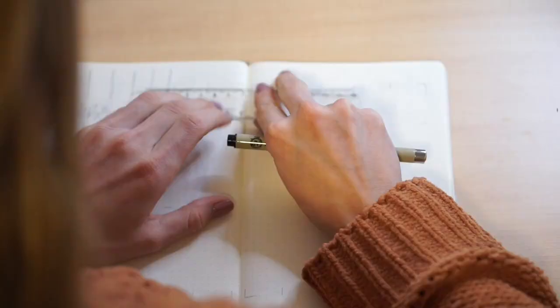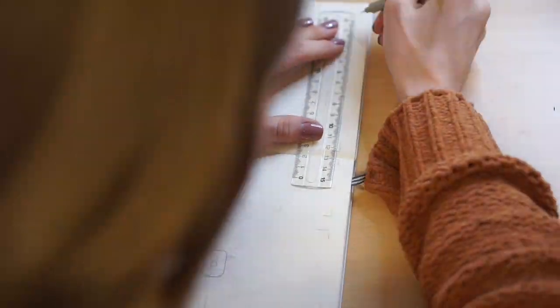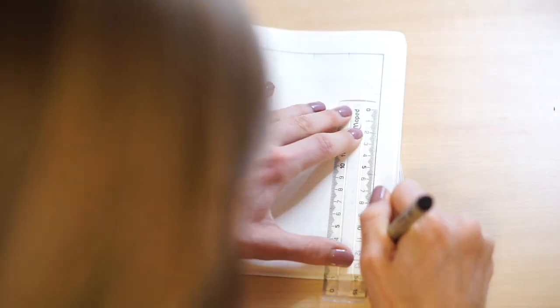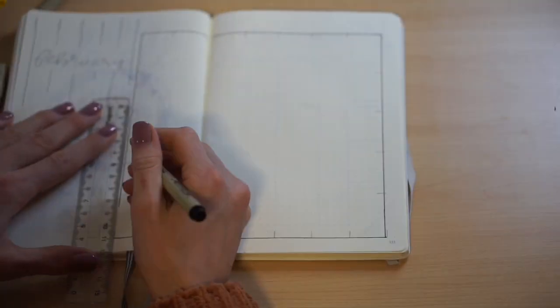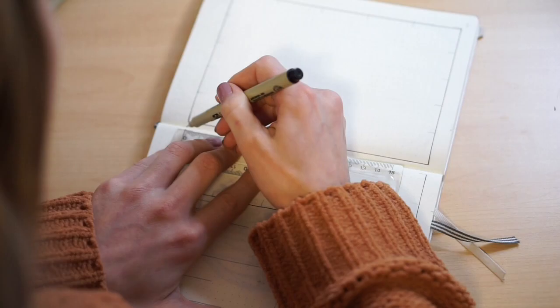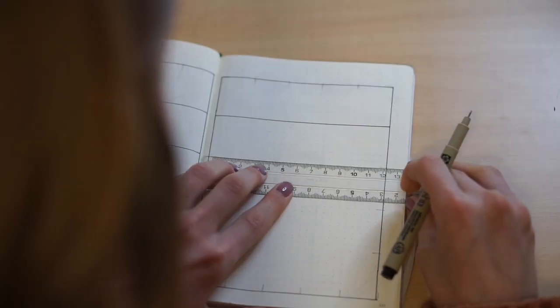Alright everyone, now I am moving on to my calendar spreads for the month of February. I decided to make my calendar squares, I believe it's 7 by 5 dots. That way my calendar is a little bit more squished and I have room to doodle things on the sides of the calendar.